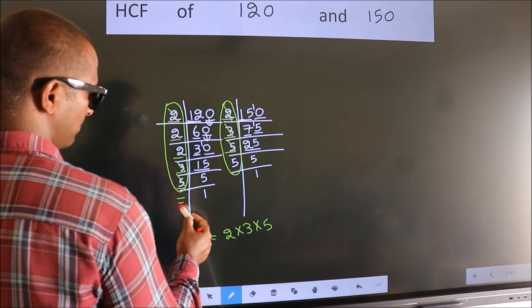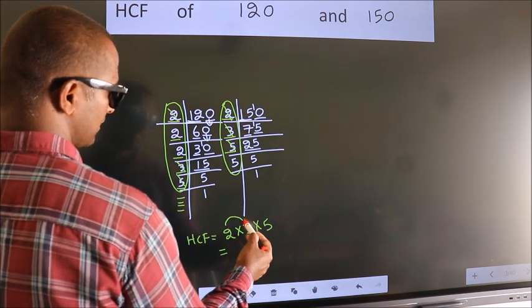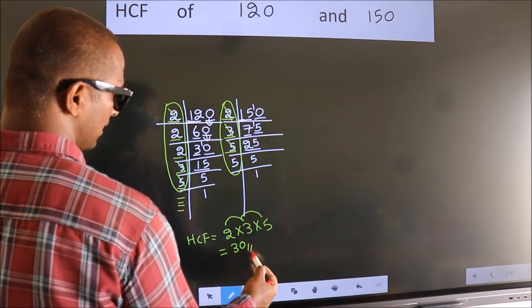No more numbers have been left out. So our HCF is 2 into 3, 6 into 5, 30 is our HCF.